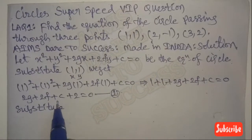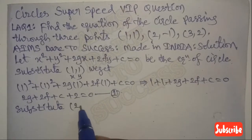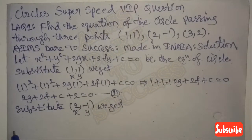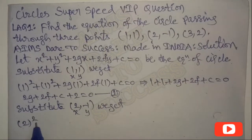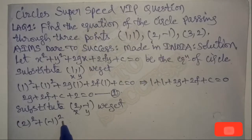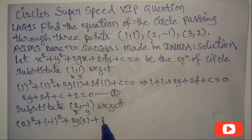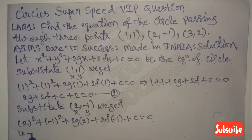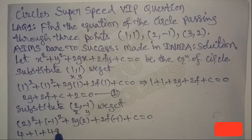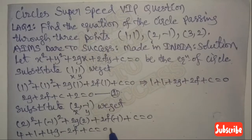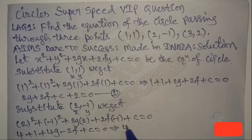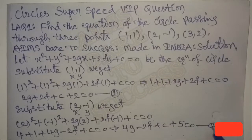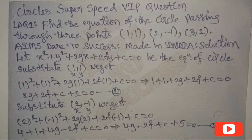Second point (2,-1): substitute in the standard equation of the circle. We get 2² + (-1)² + 2G(2) + 2F(-1) + C = 0, which gives 4 + 1 + 4G - 2F + C = 0, so 4G - 2F + C + 5 = 0. Let this be Equation 2.